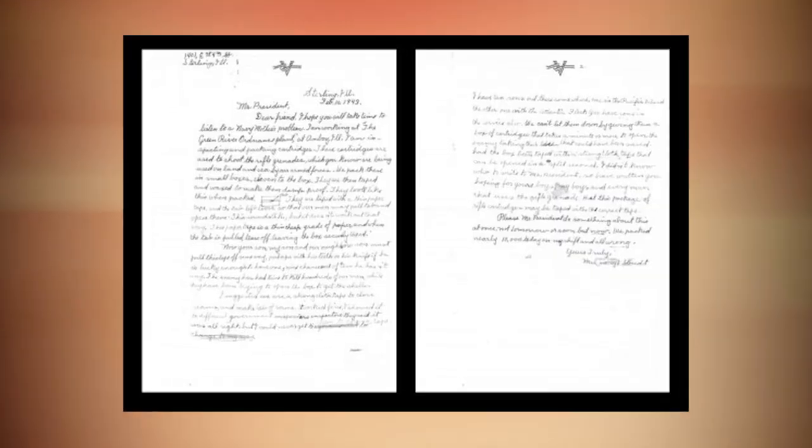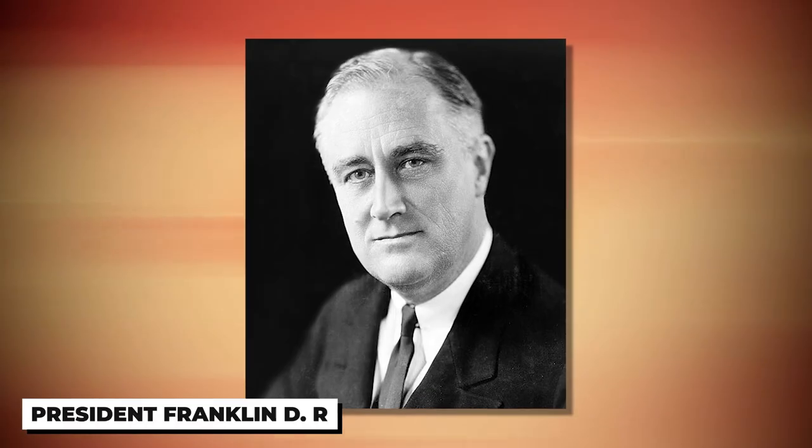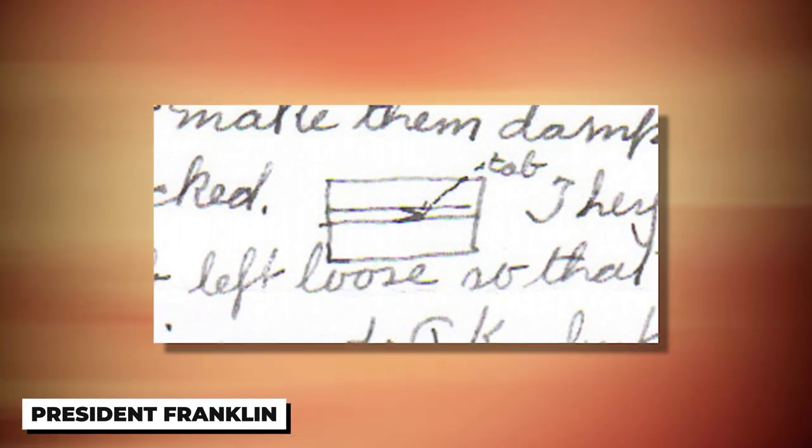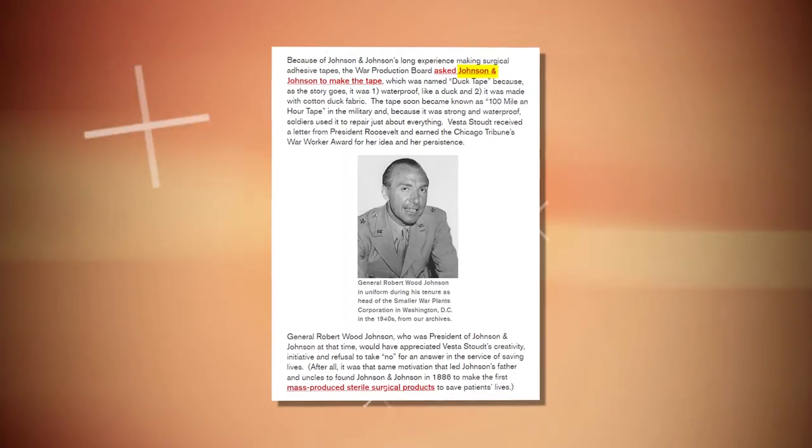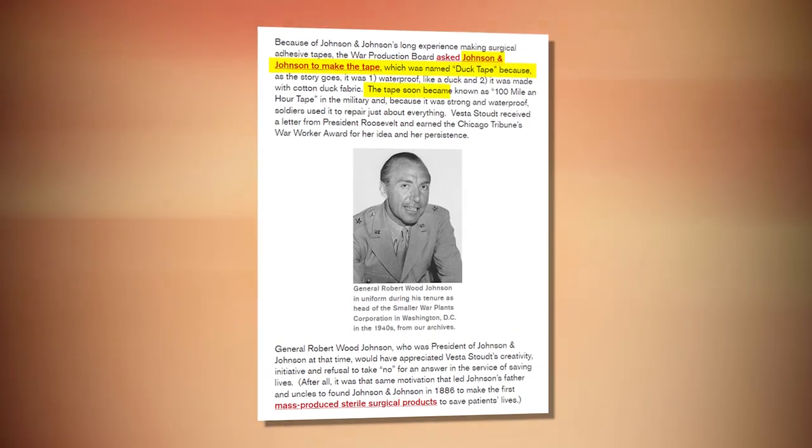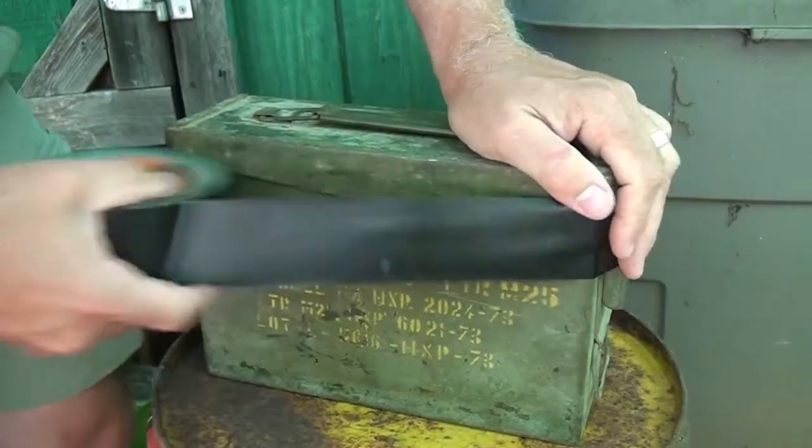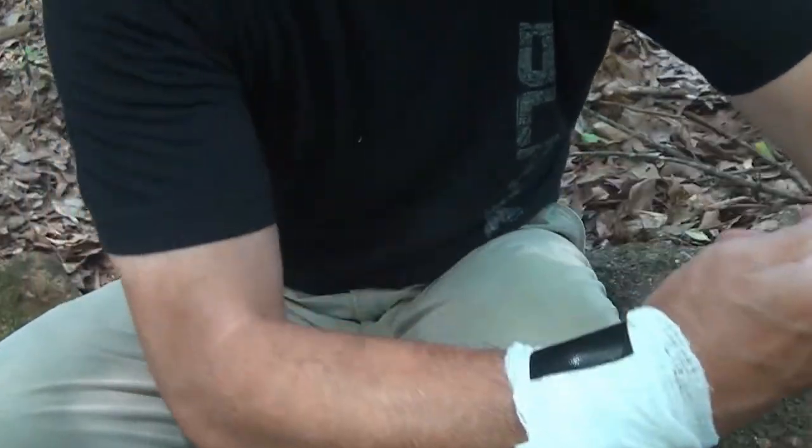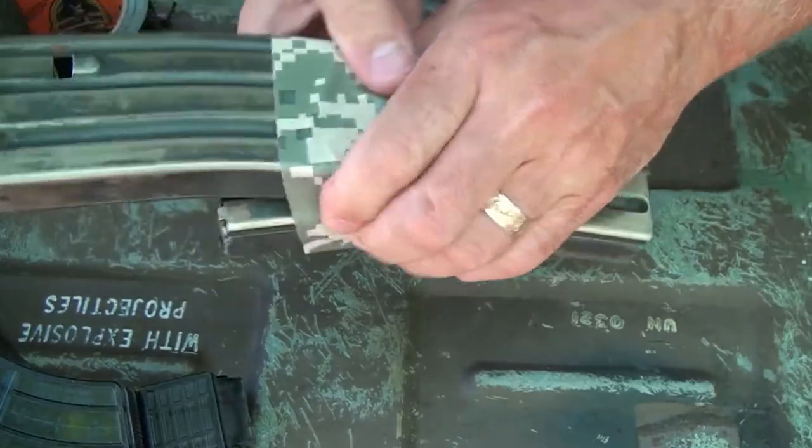After facing resistance, she wrote a letter to President Franklin D. Roosevelt. Gaining approval from the War Production Board, Johnson & Johnson's Industrial Tape Corporation brought it to life, and the military named it 100 miles per hour tape for its versatility. Fast forward to today, soldiers still rely on duct tape for various repairs, showcasing its enduring usefulness.